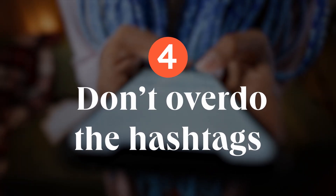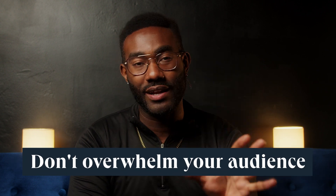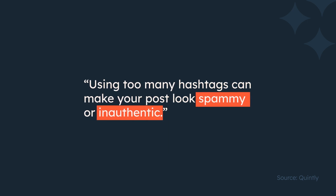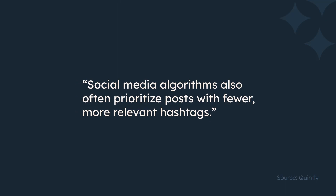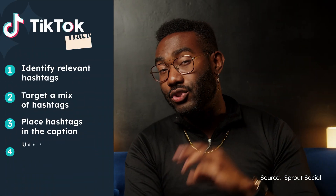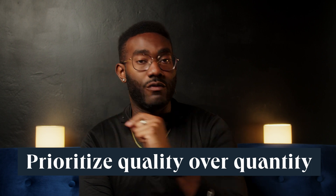Tip number four: don't overdo the hashtags. The search for hashtags can be absolutely exhilarating — there's an endless amount to choose from — but you don't want to overwhelm your audience with too many in one post. You technically have 4,000 characters to use, but use them judiciously and wisely. Based on research, using too many hashtags can make your post look spammy or inauthentic, and social media algorithms often prioritize posts with fewer, more relevant hashtags. As a general rule of thumb, use three to five hashtags per post so you have enough space to write a fun and descriptive caption and prioritize quality over quantity.